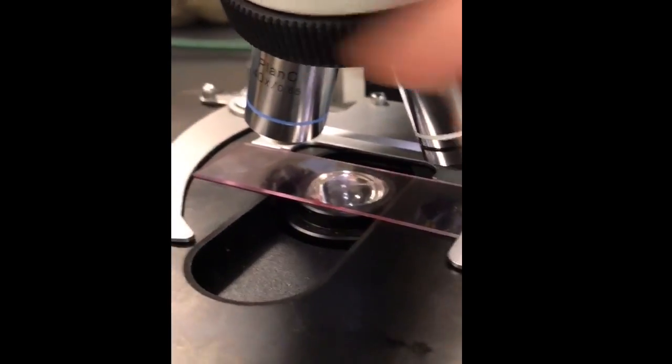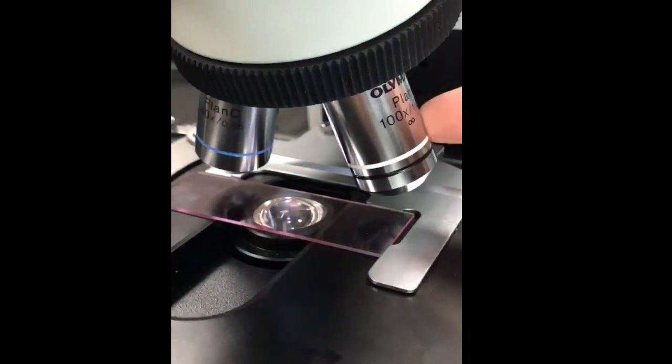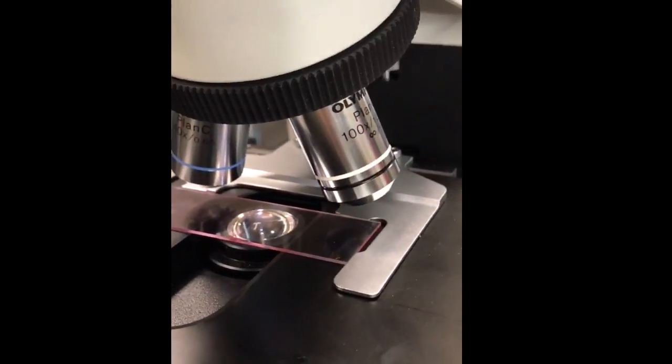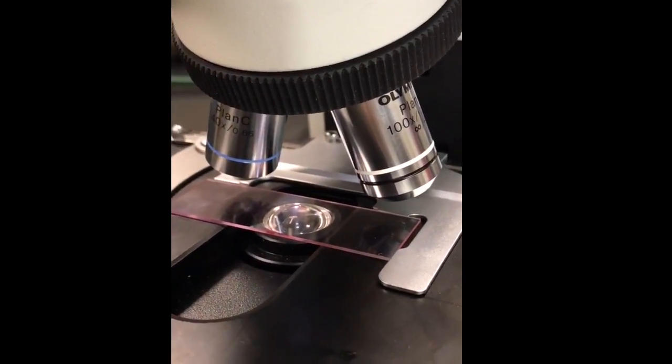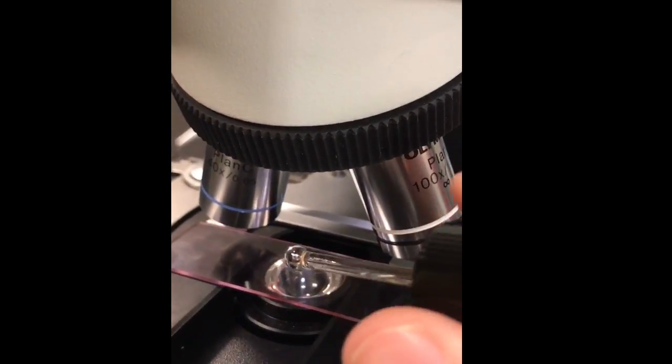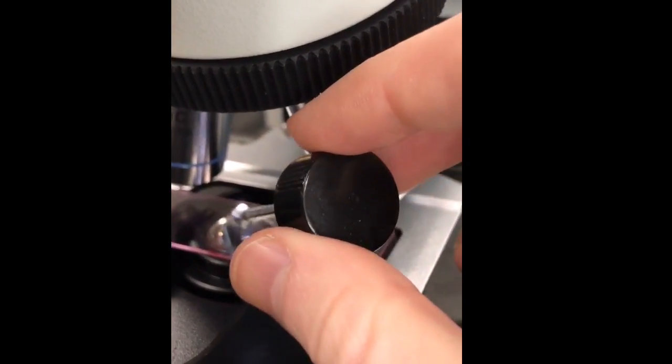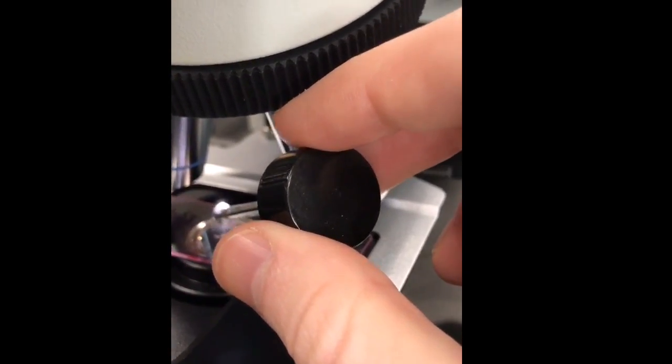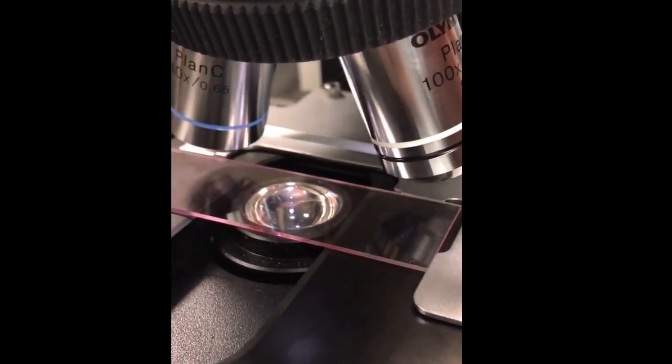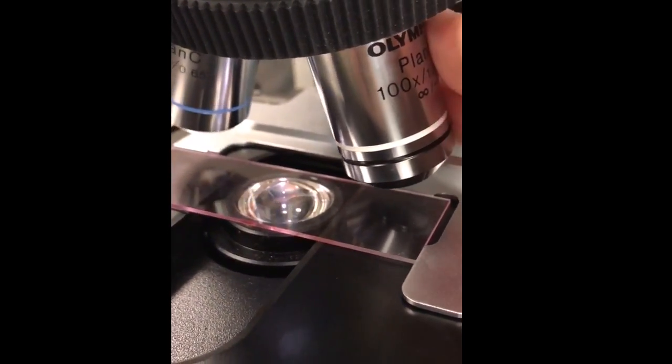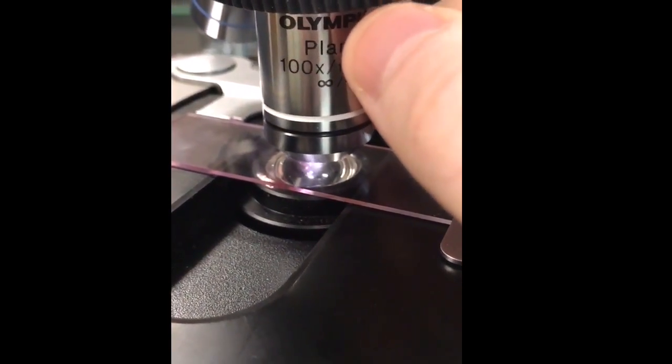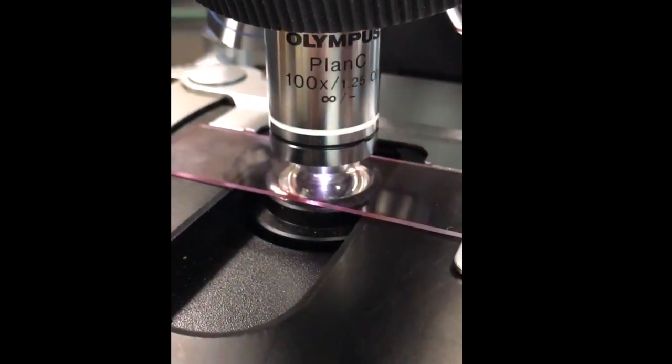Now, as you can see, we have the 40x and the 100x lenses separated over top of the slide. That is so we don't get the oil on the lenses. Feel free to add the oil right onto the slide where you'll be looking. Once you have the oil in place, move the 100x over the slide and as you can see, it dips right in the oil, which will give us a nice view.